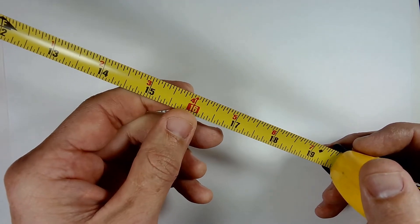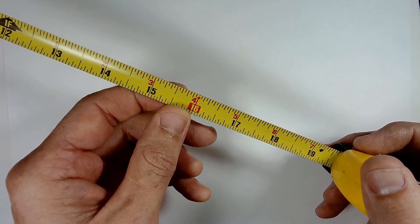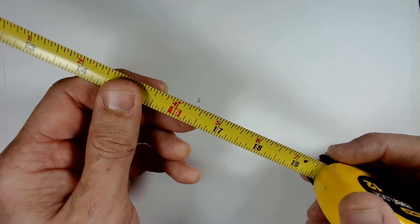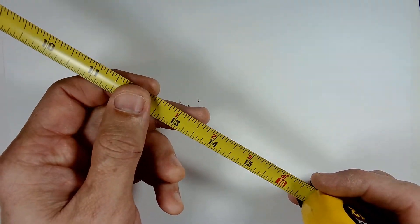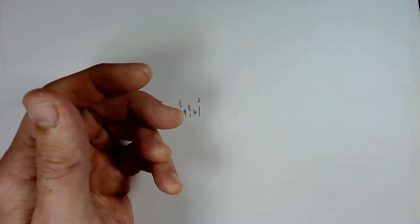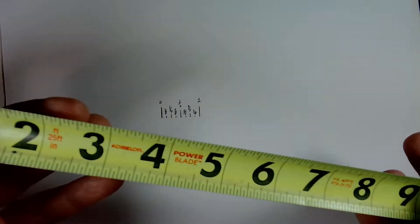Now you'll notice some red letters are typically marked on sixteenths. This is because our building construction methods. We usually make stud walls at sixteen inch on center.